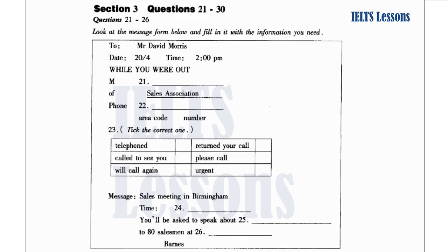Where is the meeting to be held? At the Grant Hotel. That's the message. May I have your phone number, just in case? Yes, that's 805-7492. Thank you very much. You're welcome, Mr. Ross. I'll give Mr. Morris the message as soon as he comes back.